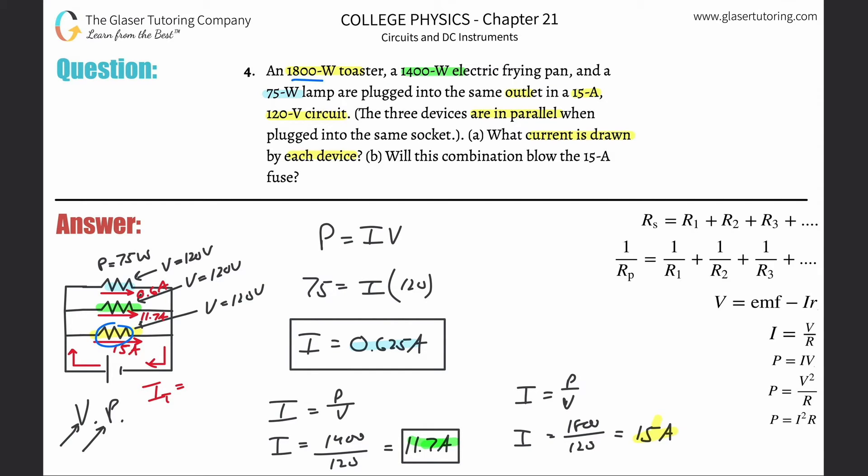through one resistor and the current flowing through another and the current flowing through another. The total current flowing around this entire circuit will be the current flowing through the first resistor plus the current flowing through the second resistor plus the current flowing through the third. So it's going to be simply 15 plus 11.7 plus 0.6.